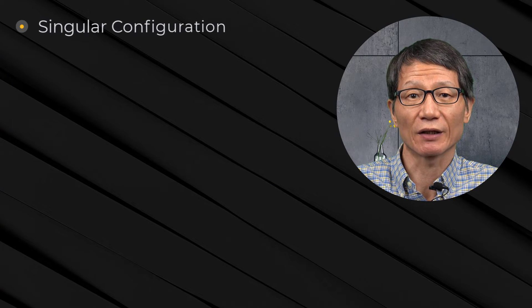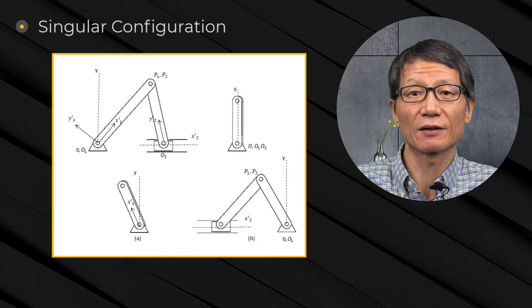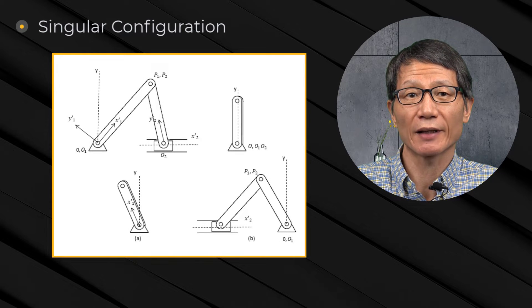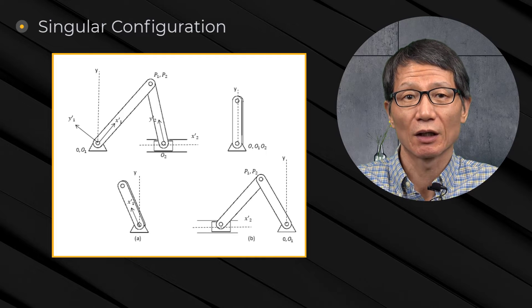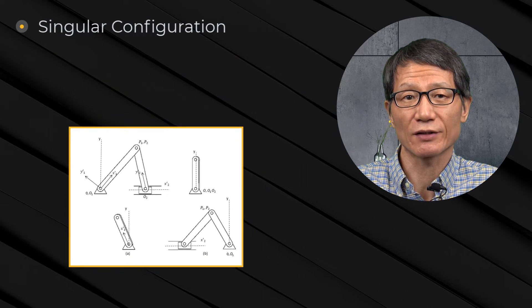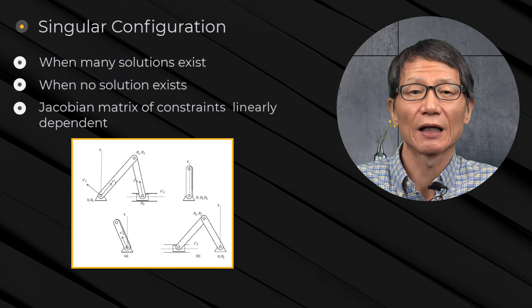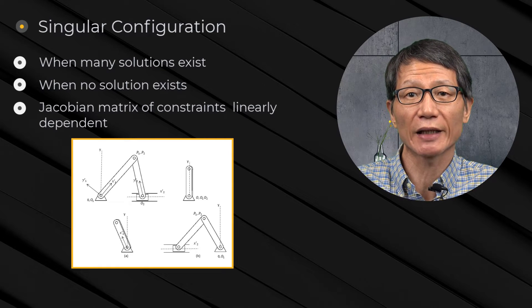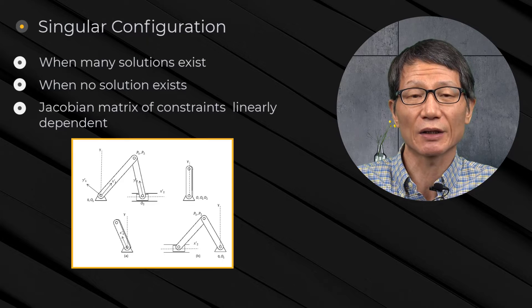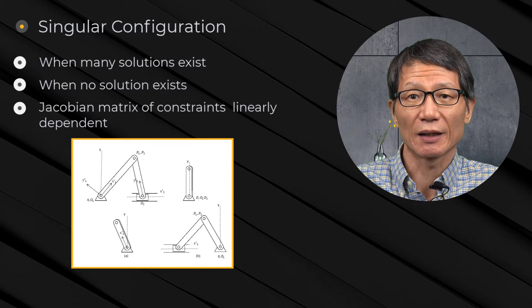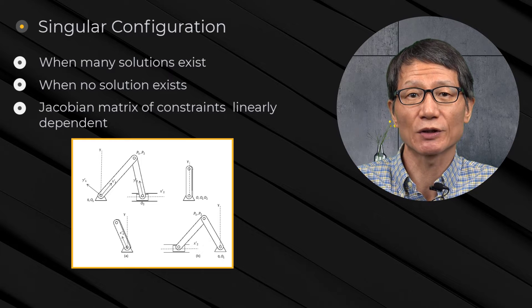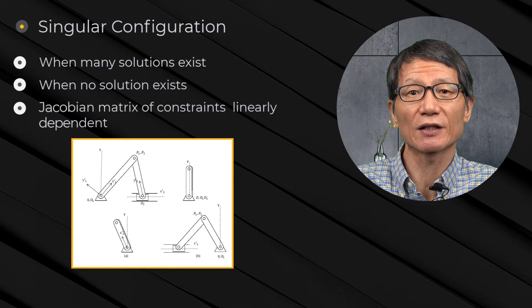Singular configuration: a mechanical system cannot move or may have two paths at a bifurcation point. We call these positions a singular configuration. The singular configurations can be detected by monitoring the Jacobian matrix of the constraint equations. If the Jacobian matrix does not have full rank, the position is the singular configuration position.